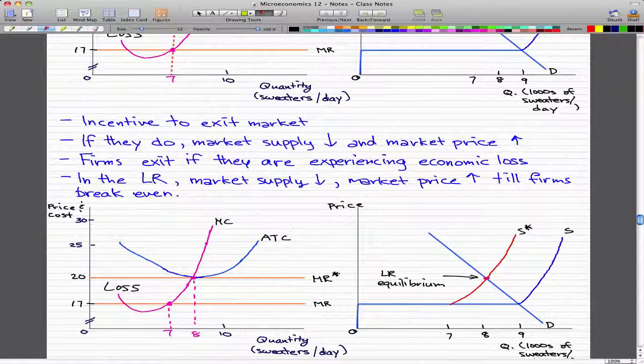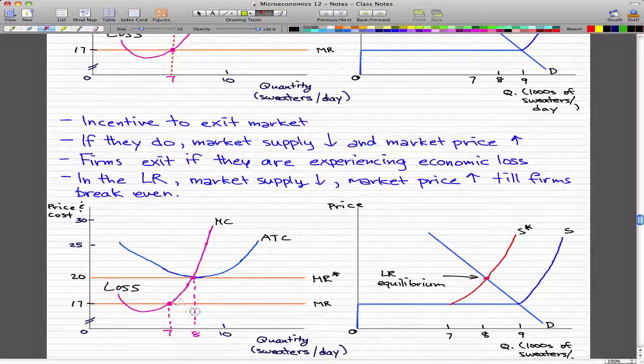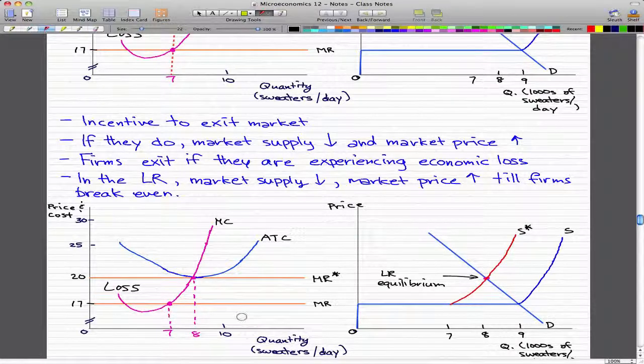And when they decide to exit, then the market supply will obviously decrease. And when there's a low supply of something, then the price for that something will rise. Because if the demand stays the same, as is seen here, the demand stays the same, but then the supply changed.